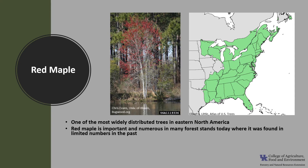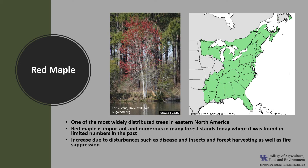Red maple is important and numerous in many forest stands today where it was found in limited numbers in the past. This increase is thought to be due to a combination of an increase in disturbances such as disease, insects, and forest harvesting, as well as fire suppression.